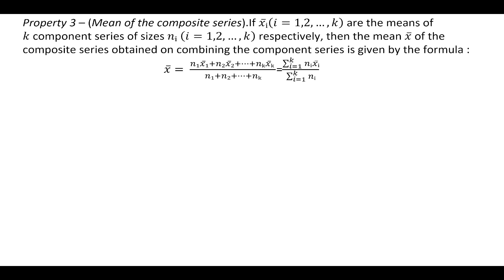The third property states that if x̄ᵢ, where i extends from 1 to k, are the means of k component series of sizes nᵢ, where i extends from 1 to k respectively, then the mean x̄ of the composite series obtained on combining the component series is given by the formula: x̄ = (Σᵢ₌₁ᵏ nᵢ x̄ᵢ) / (Σᵢ₌₁ᵏ nᵢ).